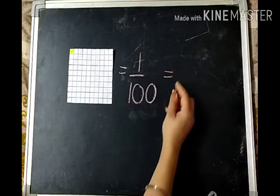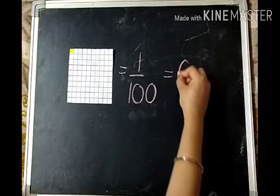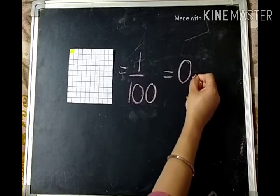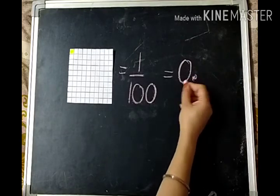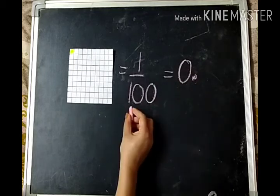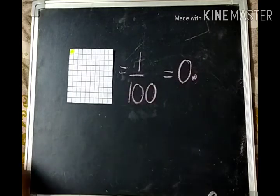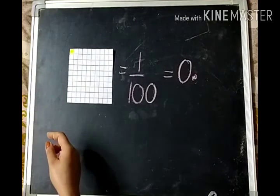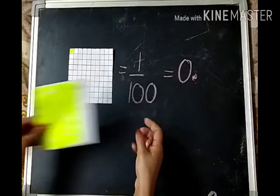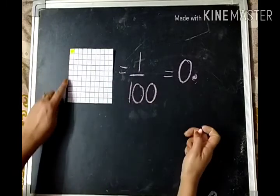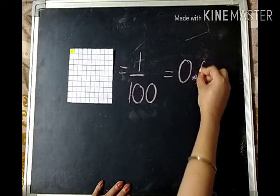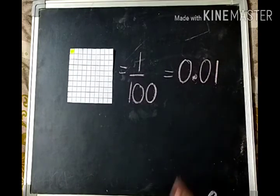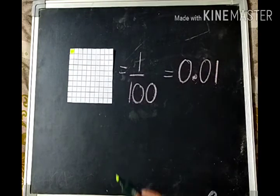Or it can also be written as: we have zero full — as we know that the decimal separates the full from the parts. How many tenth? We don't have tenth. This is the shape for tenth. We don't have tenth. We have only hundredth. So this will be written as zero point zero one.